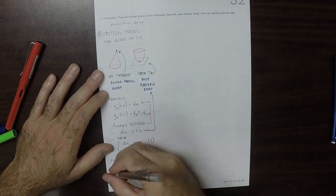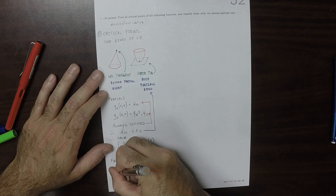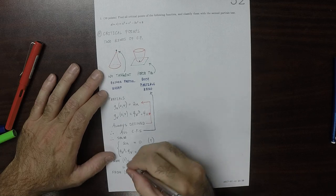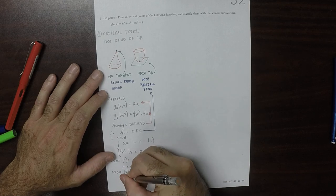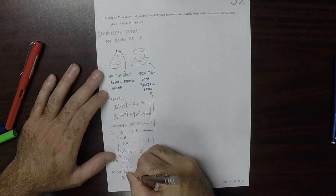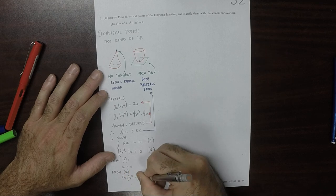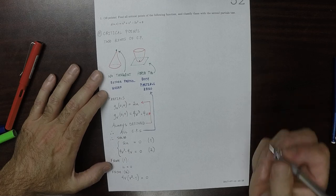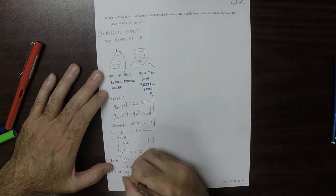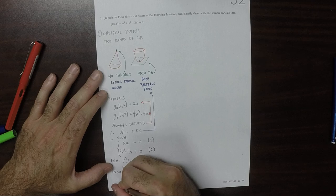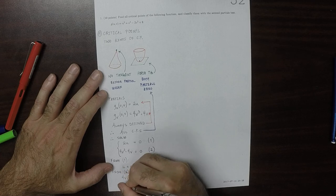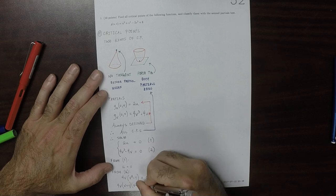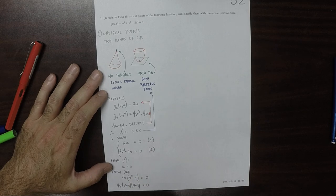And then from equation two, we could factor 4V out and obtain that it's 4V, and then V squared minus one is zero. And then we could factor V squared minus one to 4V times V plus one times V minus one is zero.